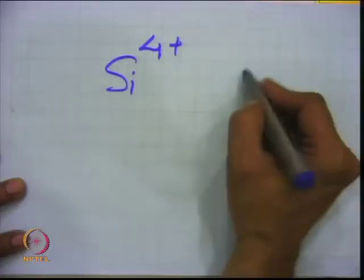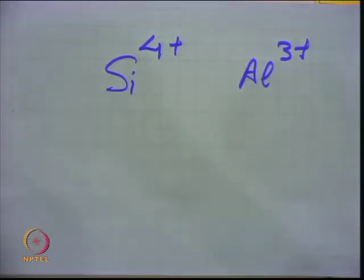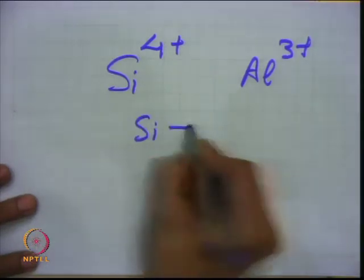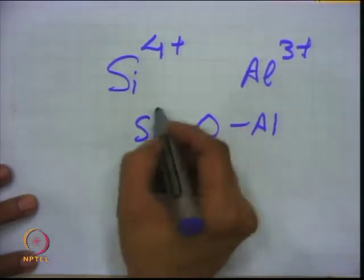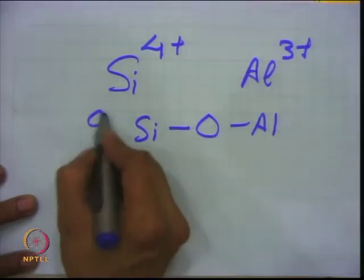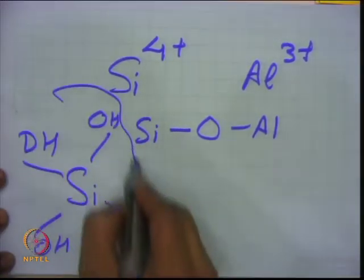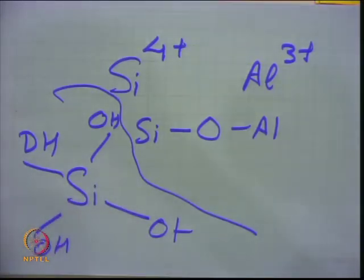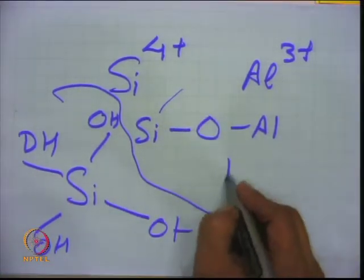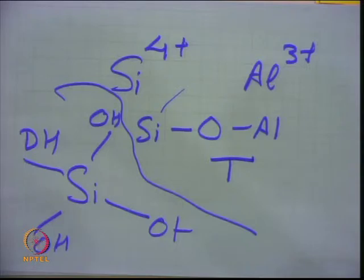The important cage or structure-building agent in zeolite involves Si⁴⁺ and Al³⁺ connected with an oxygen bridge, forming a structure like Si-O-Al. Silicon has a tetrahedral form — just like a methane molecule where hydrogen is attached to the central carbon. These are T-atoms: silicon and aluminum are called T-atoms, oxygen bridges them in a tetrahedral or prism-like structure.